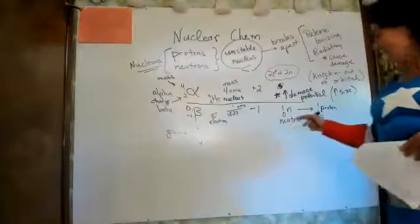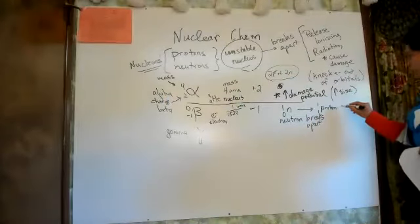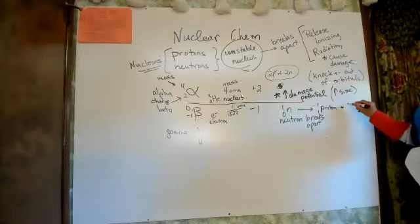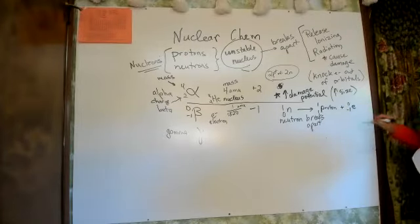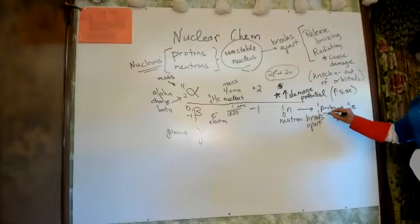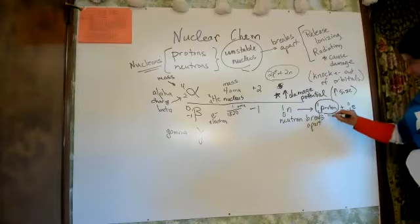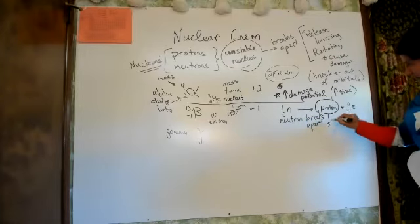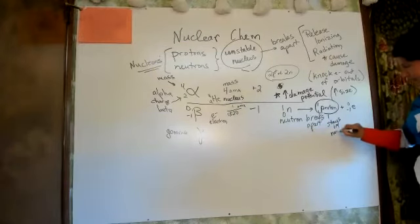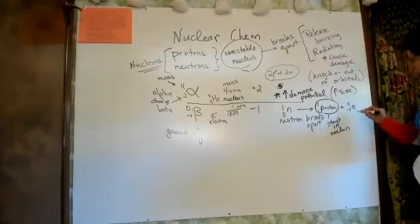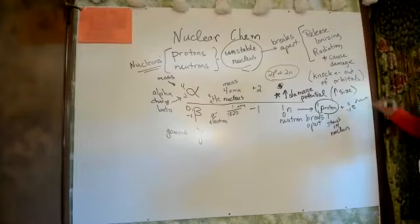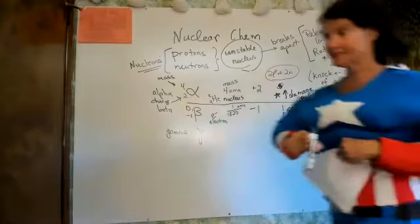What happens is the neutron splits into a proton and an electron. The proton stays in the nucleus, and the electron is released from the nucleus.